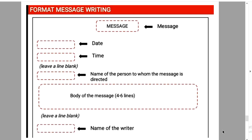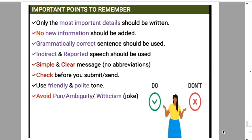Now, while writing the message, which important points do we have to keep in mind? The most important detail should be written — we should write only the most important points. We should not write a lengthy description of everything in our mind. Next, no new information should be added — we do not add any new information. Third point: grammatically correct sentences should be used. Whatever sentence we have written, we should check it for any grammar mistake before we read it.